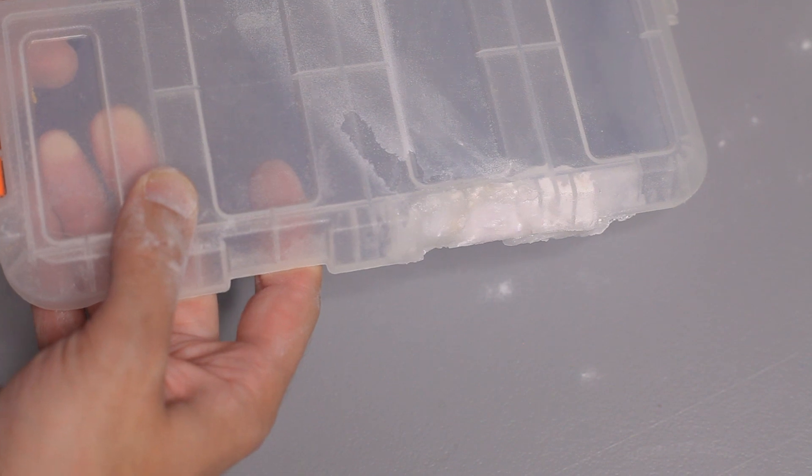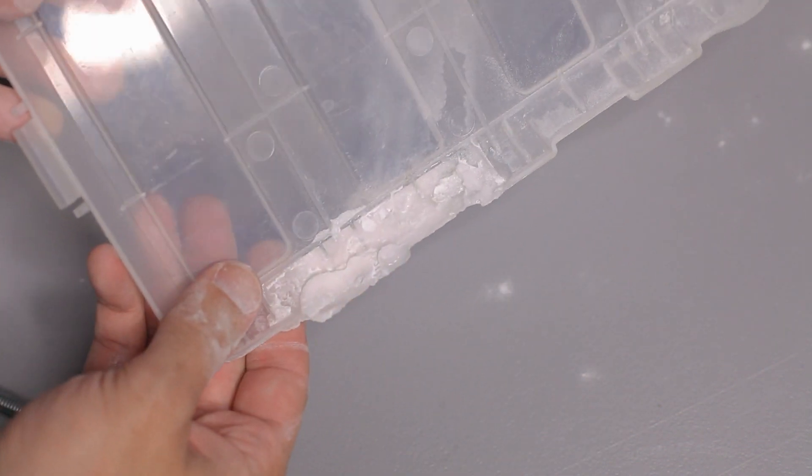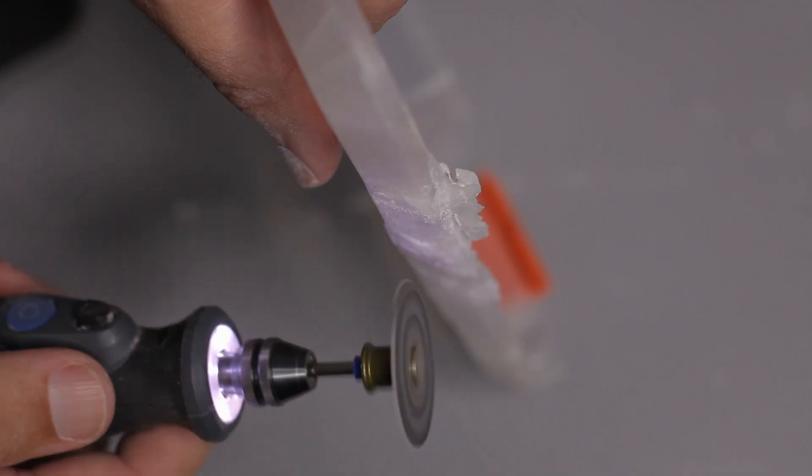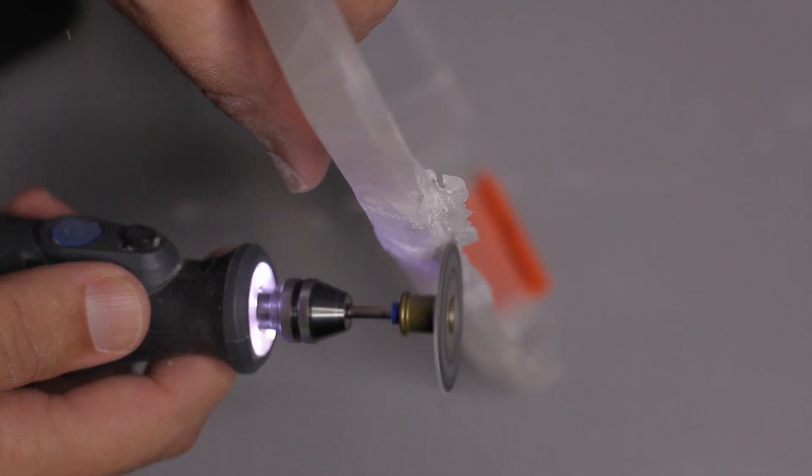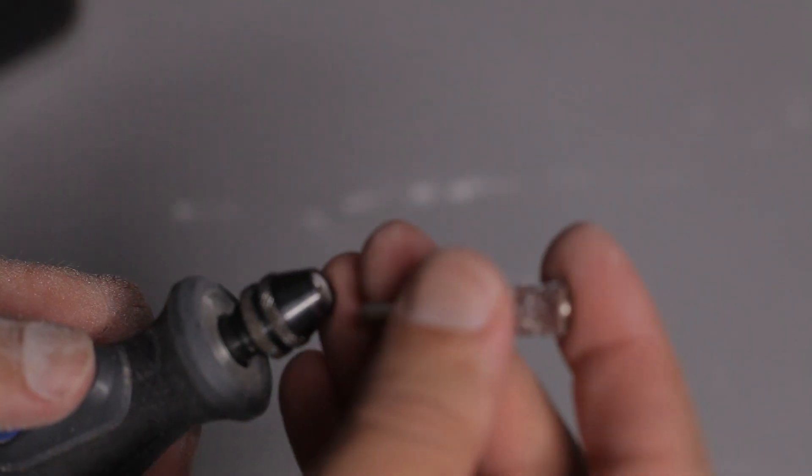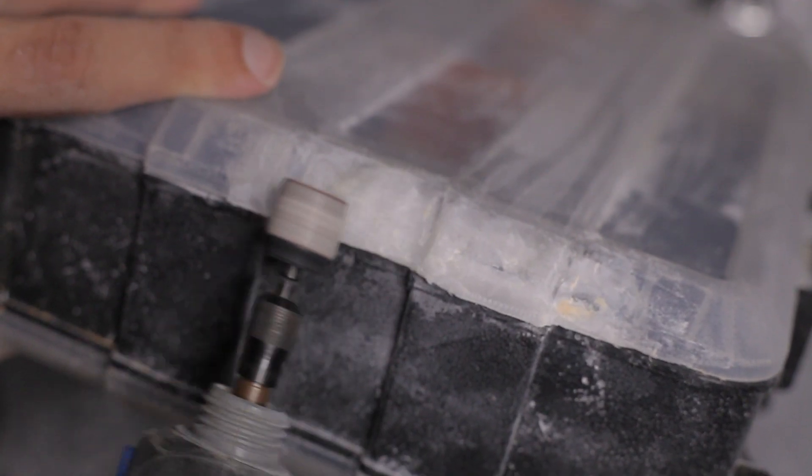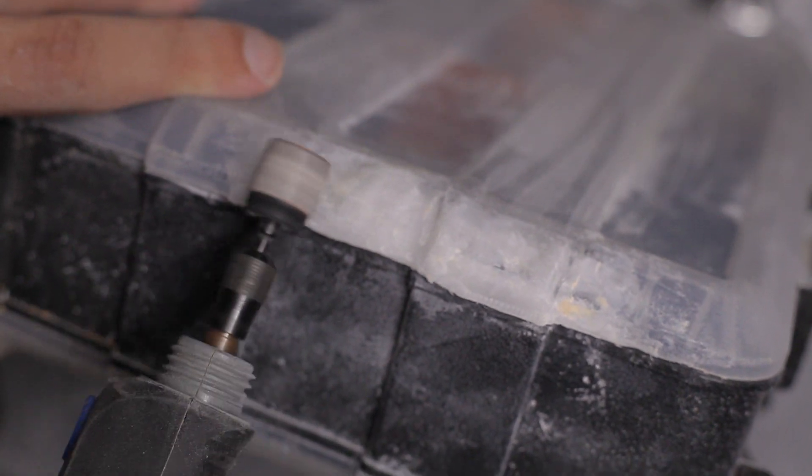But in no time at all, it is cured and I can begin refining it to make it look a little bit better. First, I cut off some of the edges with a knife, removing some of the thicker portions with a cutoff wheel on my Dremel, swapping that out for a sanding bit to further refine the shape, trying to recreate those original curves as best I can.